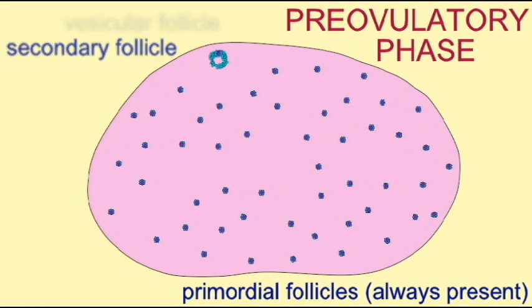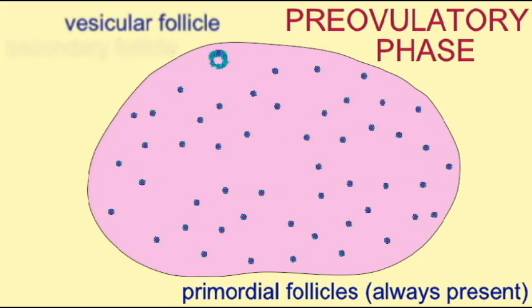This secondary follicle will develop a space known as an antrum, which will fill with follicular fluid, and as this enlarges it becomes the large vesicular follicle which can appear like a blister on the surface of the ovary.